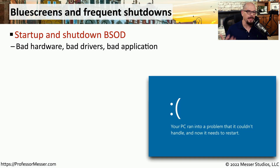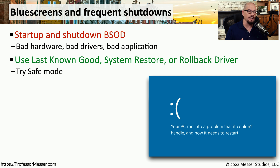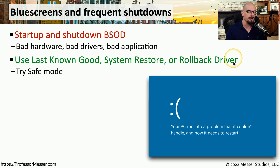There could be many reasons for a Windows stop error. It could be hardware that's going bad, it could be poorly written drivers, or maybe it's a bad application. If you believe the problem is related to software, you could try using the last known good login, use a system restore to roll back to a previous configuration, or if you just installed a driver, you might try rolling back to the previous version.